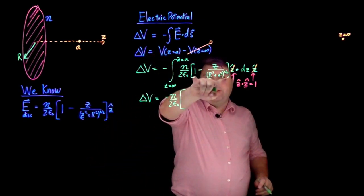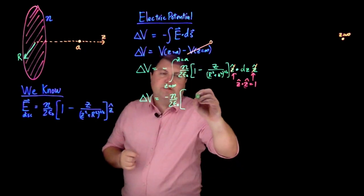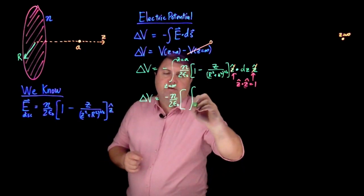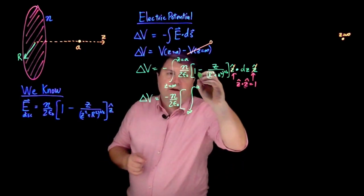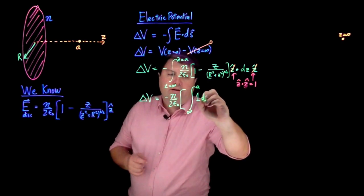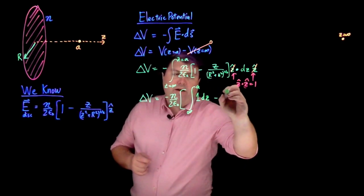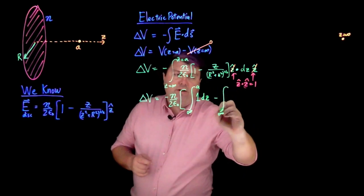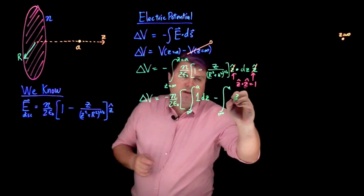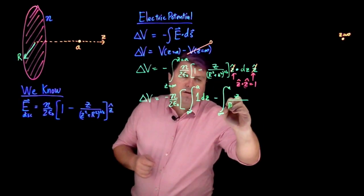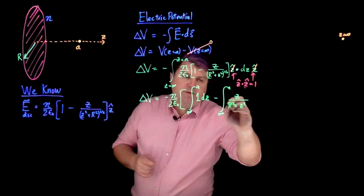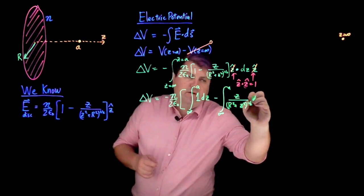And then I have these two terms, which I can make two separate integrals. I can do an integral from infinity to a of one dz, and I can subtract an integral from infinity to a of z over r squared plus z squared to the one half dz.